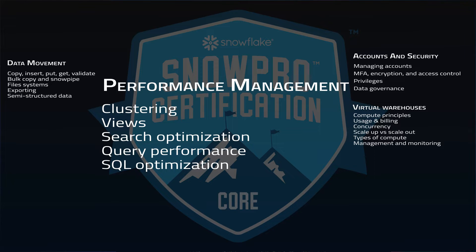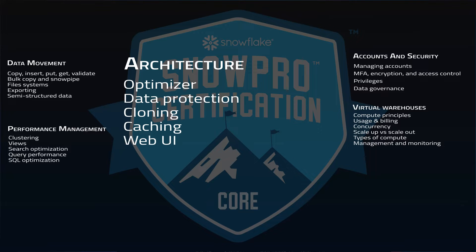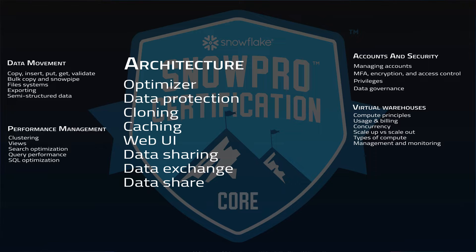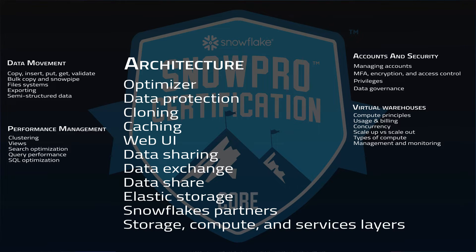The architecture section covers key components such as the optimizer, data protection, cloning, caching, and the web UI. Data sharing capability with accounts, data exchange, and data shares are included, as well as how elastic storage and compute compares to traditional data warehouses, Snowflake cloud partners, the importance of storage, compute and service layers, and the catalog of objects — databases, schema, tables, views, data types, and functions.